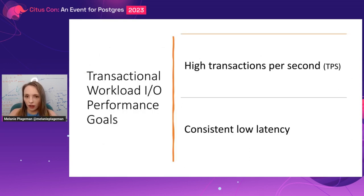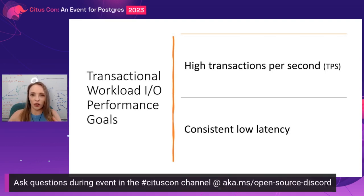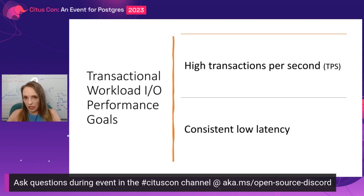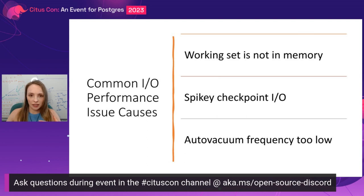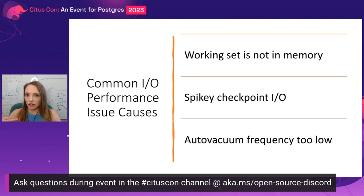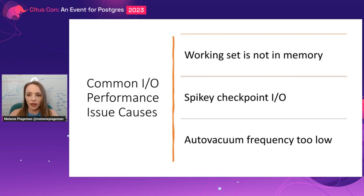Users have pretty much two main goals for their transactional workload IO performance: they care about throughput and they care about latency. So you want high TPS and low latency, low tail latency — those are the things that really matter when you're thinking about performance. Some of the impediments to that: the most obvious one is if your data is not in shared buffers. If your data is either too large for shared buffers or you've misconfigured shared buffers, you're going to see more IO, and that can be a common performance issue.